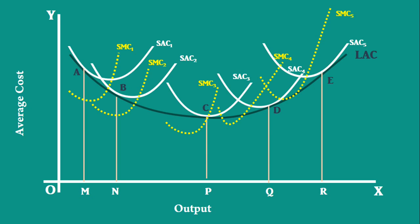The most important step is we have to fix the marginal cost for each plant. Output M units are produced by the first plant. Its average cost is MA. Its marginal cost is MF. In the same way we have to fix the marginal cost for other plants.